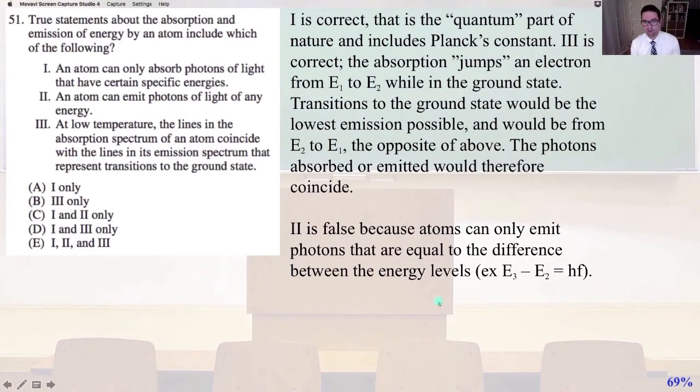So number one is correct, that is the quantum part of nature and includes Planck's constant. Number three is also correct. The absorption jumps an electron from E1 to E2 while in the ground state. Transitions to the ground state would be the lowest emission possible and would be from E2 to E1, the opposite of above. So the photons absorbed or emitted would therefore coincide. Number two is false because atoms can only emit photons that are equal to the difference between energy levels, for example, E3 minus E2 equals hf. So that means our answer is one and three only, letter D.